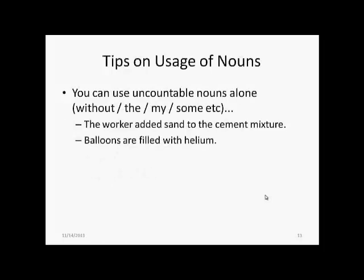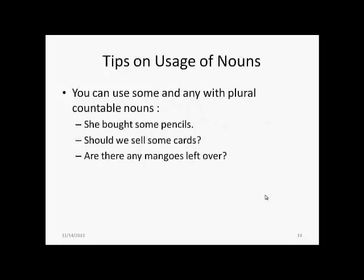We can use uncountable nouns alone. For example, you can say 'the worker added sand to the cement mixture' and 'balloons are filled with helium.' Although sand and helium are uncountable nouns, you can use them without the article. You can use some and any with plural countable nouns. So it would be proper to say 'she bought some pencils,' 'should we sell some cards?' or 'are there any mangoes left over?' The nouns pencils, cards, and mangoes are countable, and hence it is proper to use words like some or any to define a small quantity.